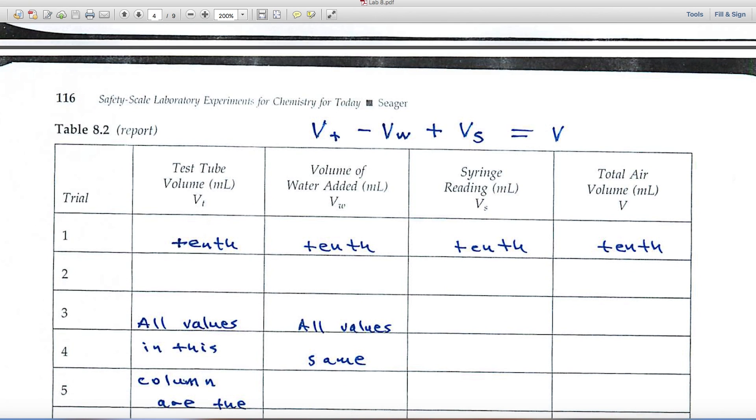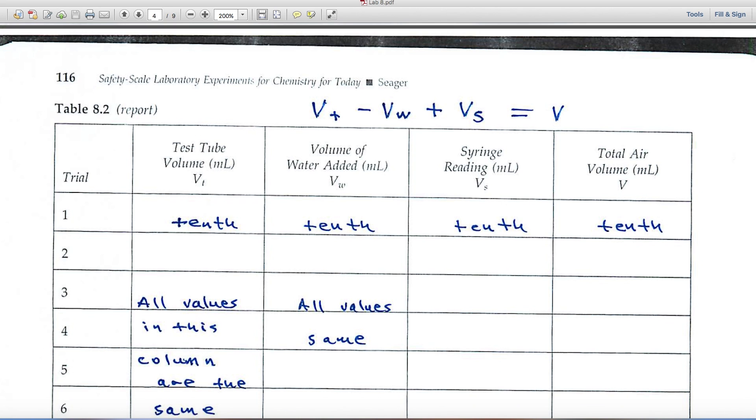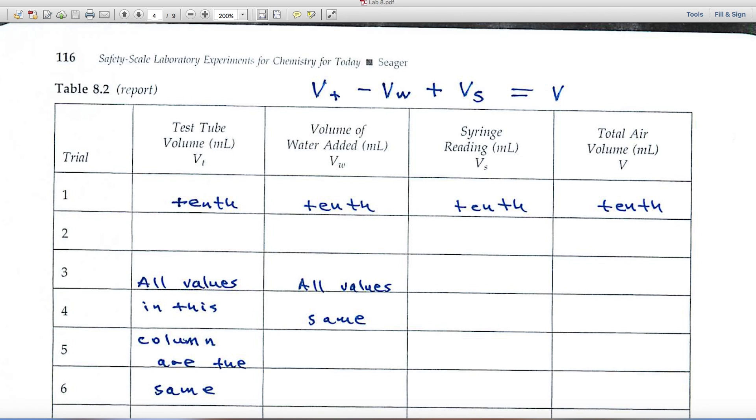In table 8.2, you're gathering, I was going to say you're gathering more data, but this is the report part. The first column is the volume of the test tube. I want to make sure that all these values are recorded to the tenth.